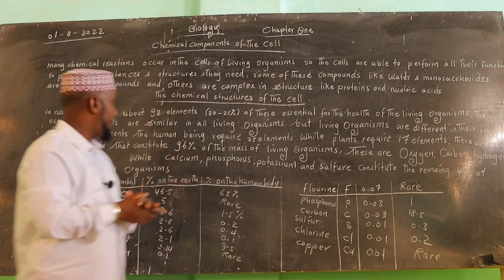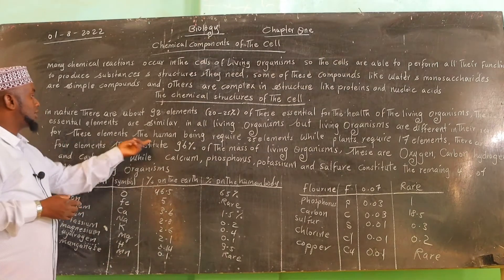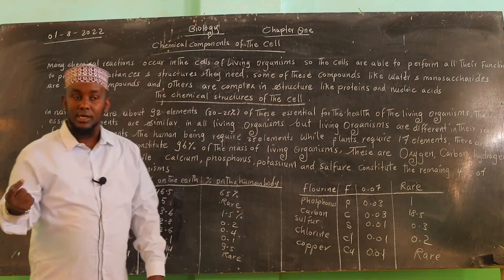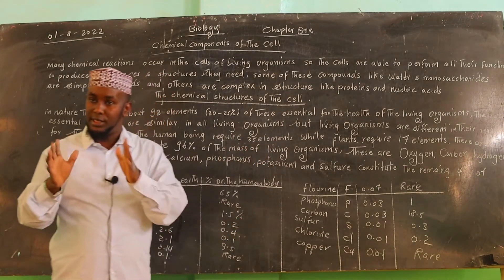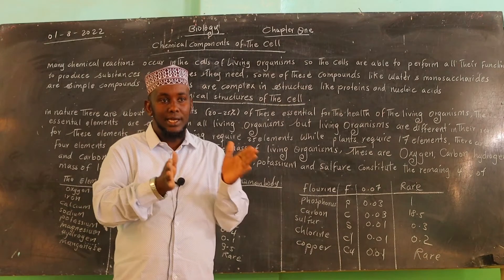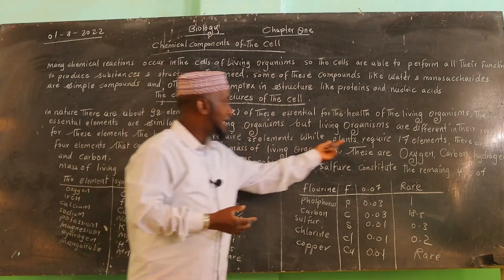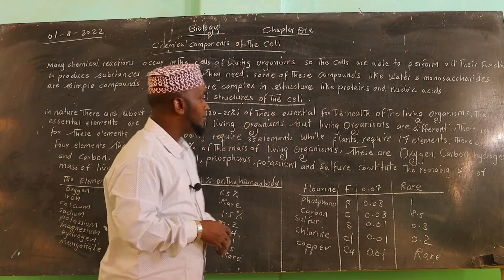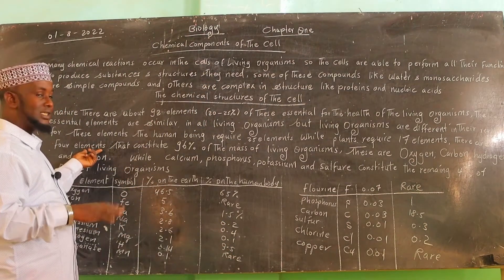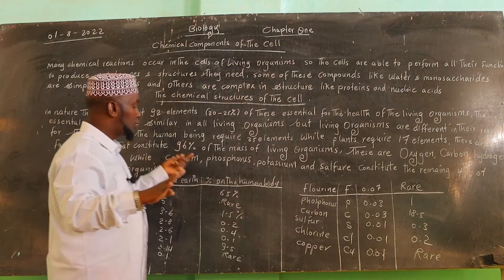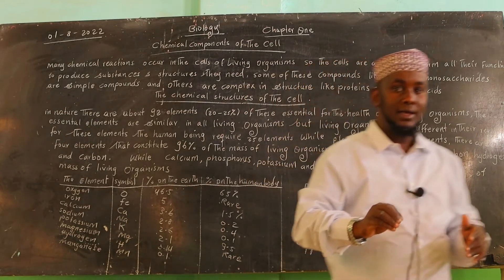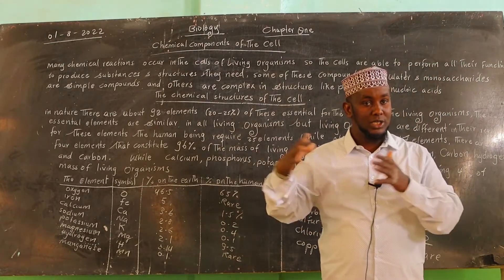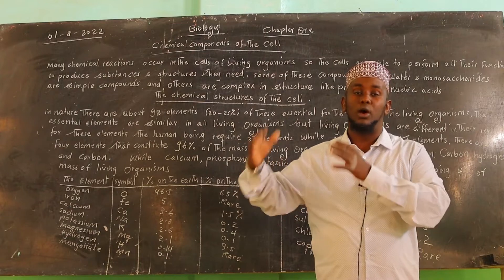There are 25 elements required by the human being, while the plant requires 17 elements. There are four elements that constitute the mass of living things, and there are three additional elements in the structure.